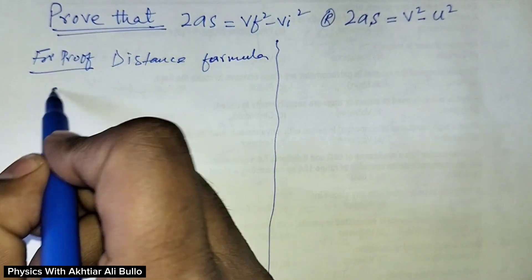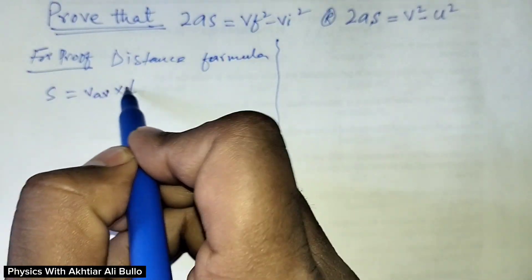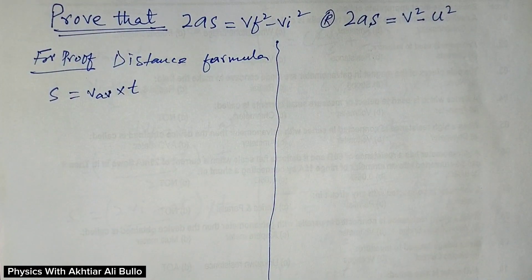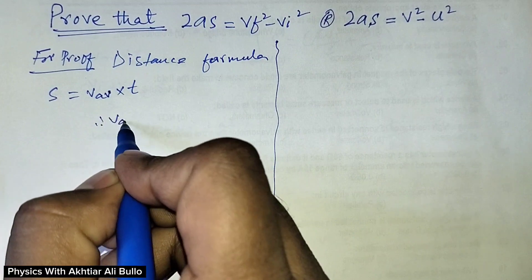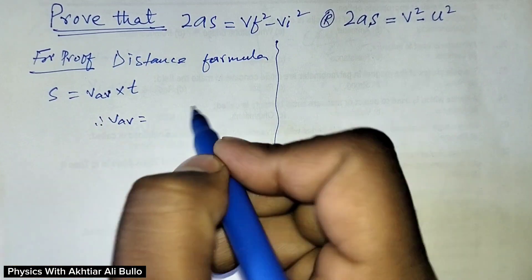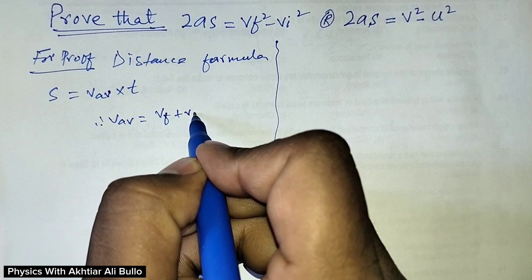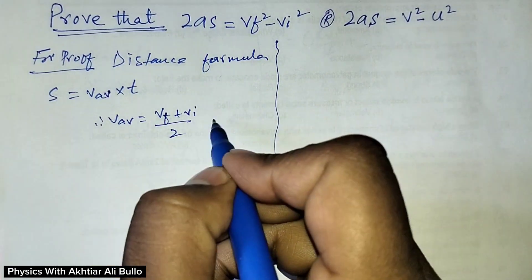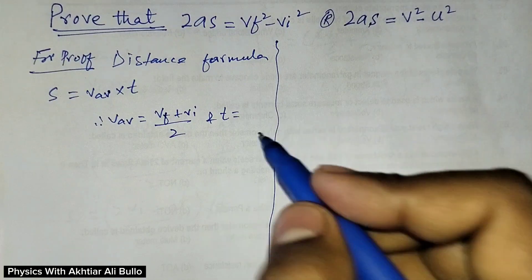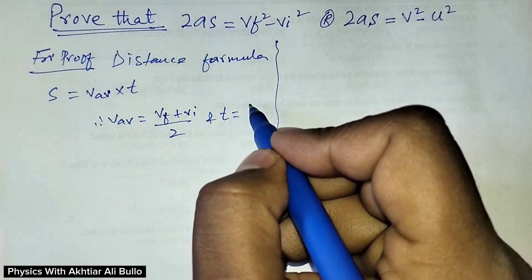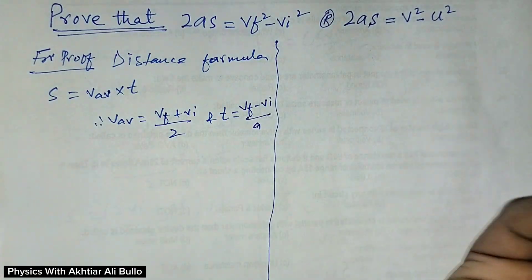The distance formula is S is equal to average speed into time, where average speed is equal to Vf plus Vi upon 2. And from the first equation of motion, we will obtain time as Vf minus Vi upon A.